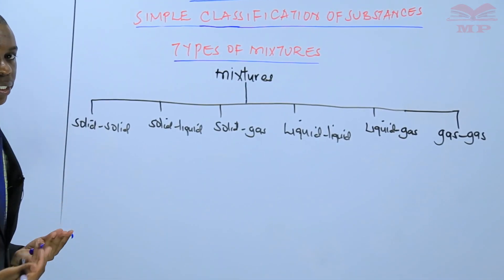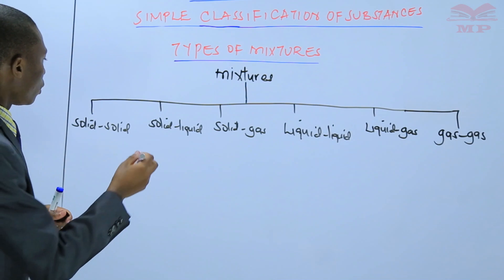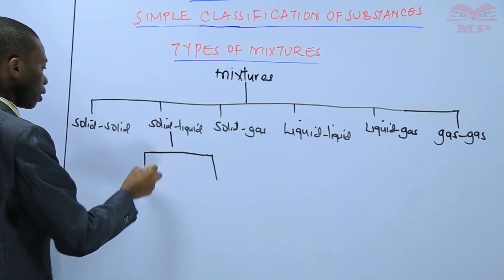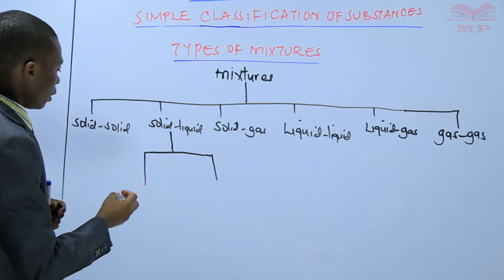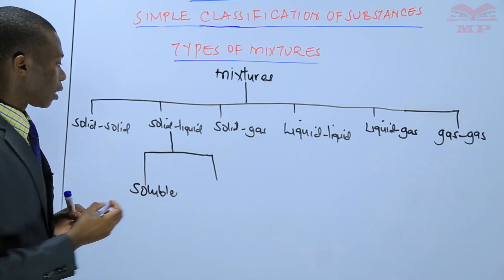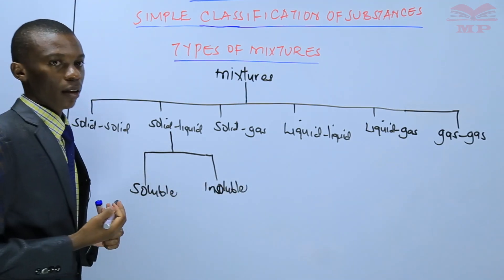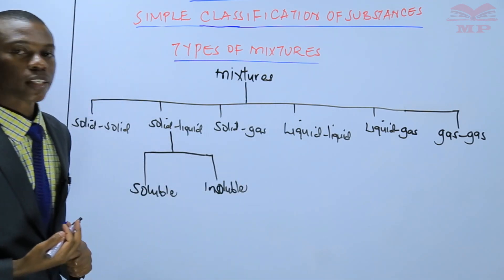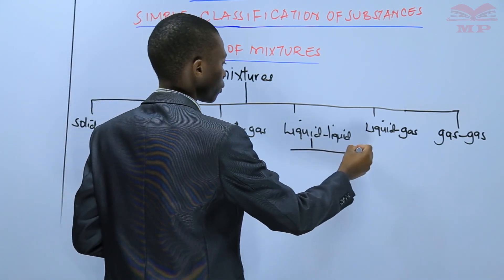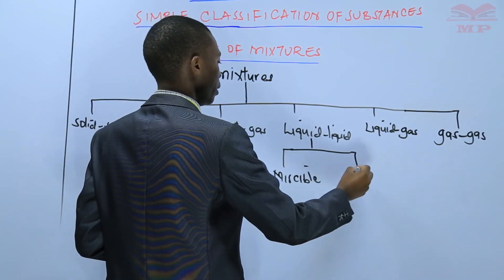The solid-liquid mixture can be further divided into two subcategories: a soluble solid-liquid mixture and an insoluble solid-liquid mixture. Similarly, the liquid-liquid mixture can be divided further into miscible and immiscible liquid-liquid mixtures.